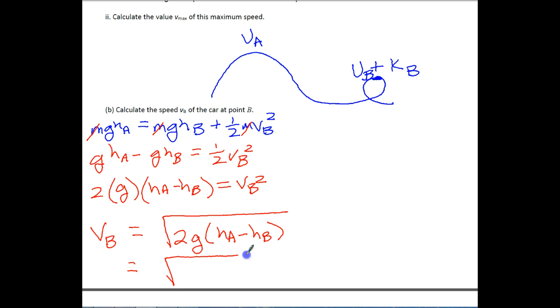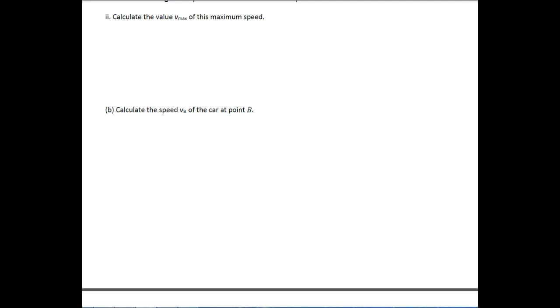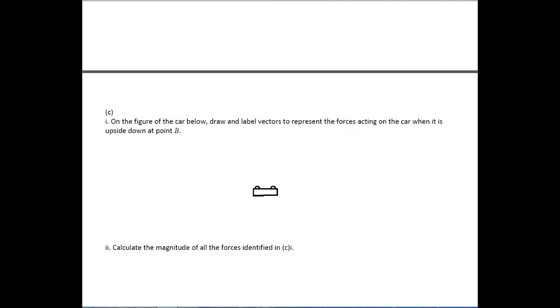So let's go ahead and plug everything in. This is the square root of 2 times 10 times the height at A, which we know is 90 meters from our picture that we had earlier, minus, and then the height of this little hoop here is 50 meters. And if you do all that math, you should end up with a speed of 28.3 meters per second. That's part B. Let's go on with part C. We're going to clear this off. We'll move on down to part C.